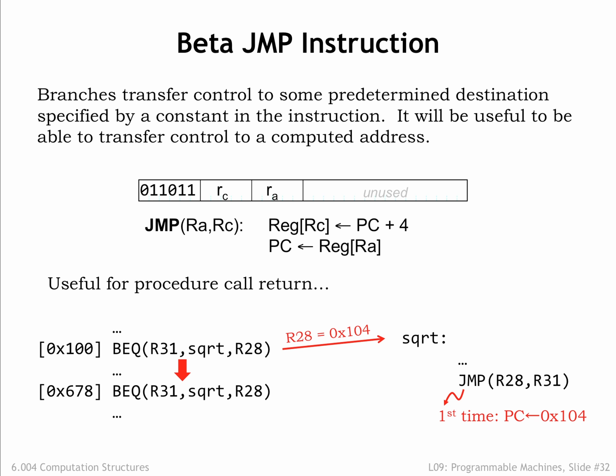When we get to the second call to the square root procedure, the sequence of events is the same as before, except that this time R28 contains 0x67C, the address of the instruction following the second BEQ. So the second time we reach the end of the square root procedure, the JUMP sets the PC to 0x67C, and execution resumes with the instruction following the second procedure call.